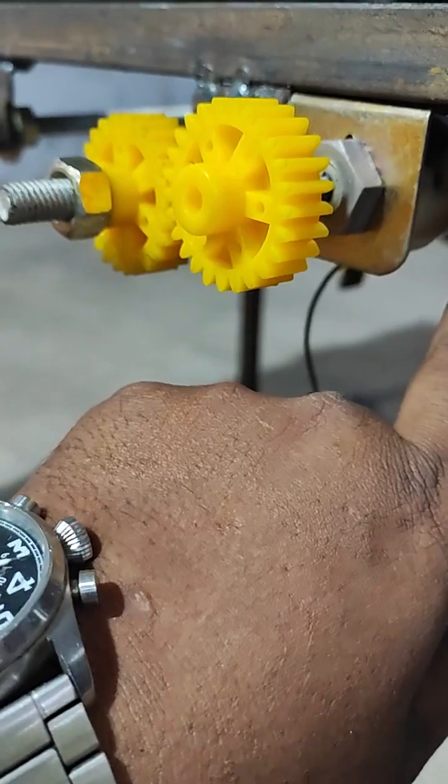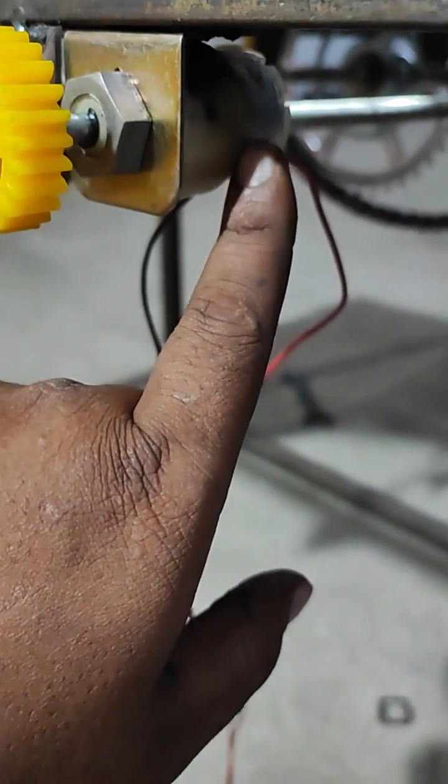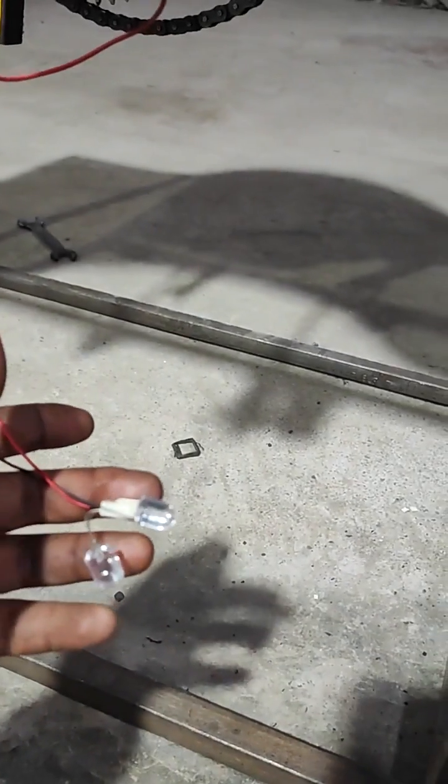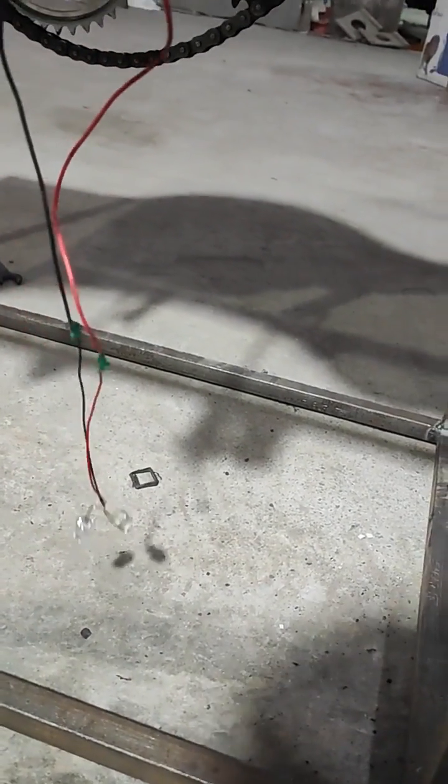This winding will be generating the voltage. This permanent magnet DC motor is going to generate the voltage, which will be indicated via LED whenever it is generating the voltage.